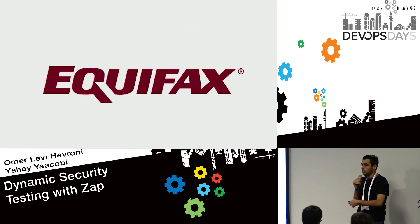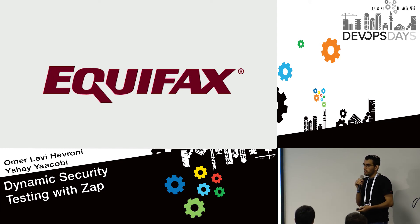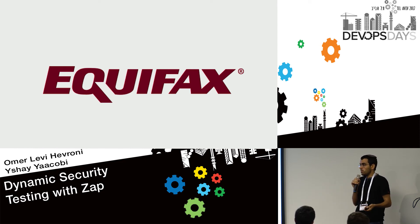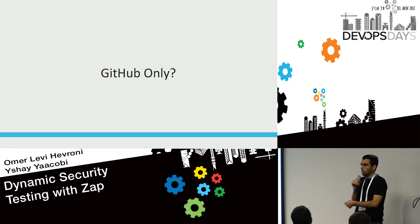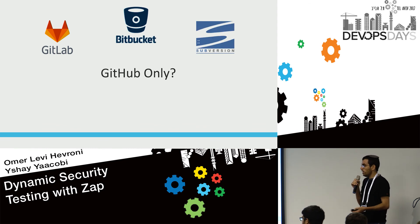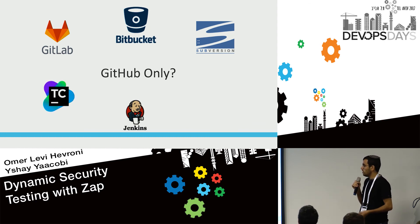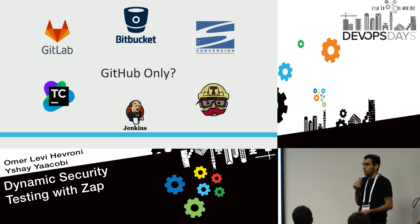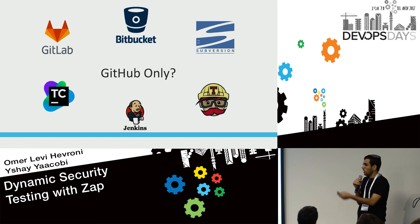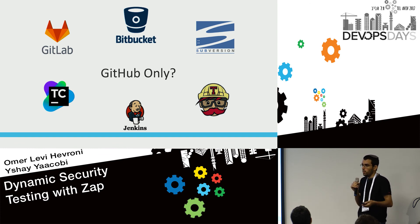Going back to where we started with Equifax: you can now see how to add security tests to your CI that give really high value, are simple to integrate, and — very importantly — are completely free. This doesn't only apply if you're using GitHub or open source; it doesn't matter whether your CI is GitLab, Bitbucket, Subversion, TFS, on-prem or cloud, or whether you're using TeamCity, Jenkins, Travis, or any other CI. The only requirement is Docker, which is very common today. And thanks to Glue, you can tailor reports to Microsoft Teams, Jira, or whatever you need.